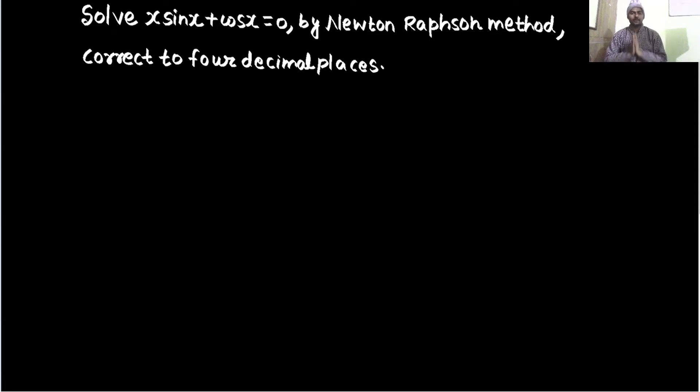Hello everyone, Namaskar, Raj Krishna Desai. Let's solve this question. It says solve x sin x plus cos x equals to 0 by Newton-Raphson method correct to 4 decimal places. In Newton-Raphson method, the function is important. So function is x sin x plus cos x equals to 0.